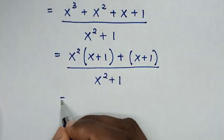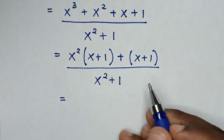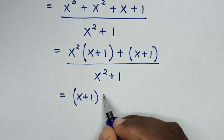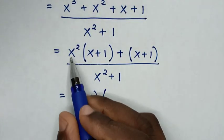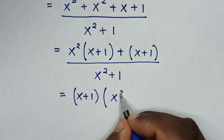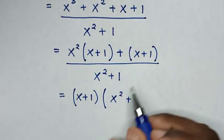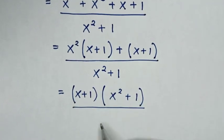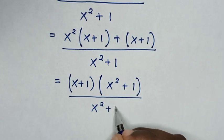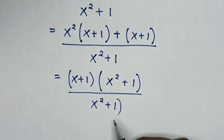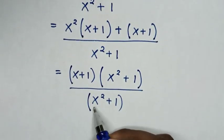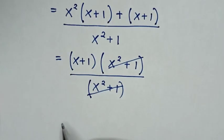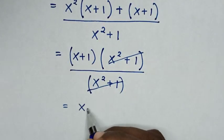Then it will be equal to — from here (x plus 1) is common, so we take out (x plus 1). This divided by this gives x squared, plus this divided by this gives 1, over x squared plus 1. Now to simplify, x squared plus 1 cancels each other. Then it will be equal to x plus 1.